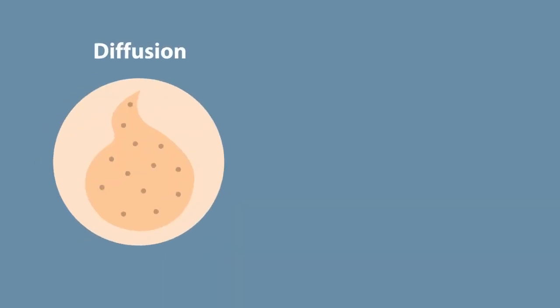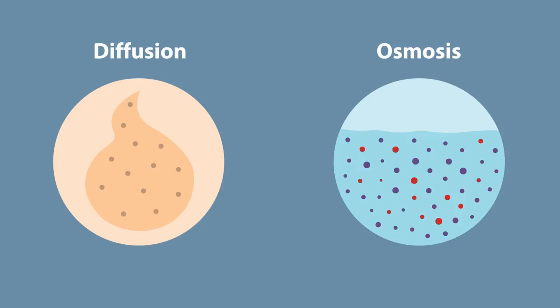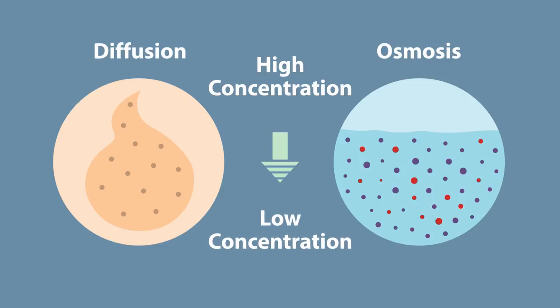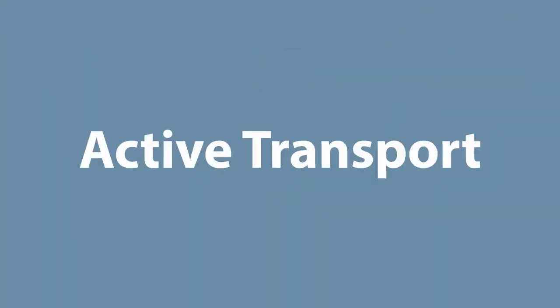In the first part of this video we looked at diffusion for the movement of gases and osmosis for the movement of water. They were things that could easily move from a high concentration to a low concentration. That makes sense. So what is active transport for?